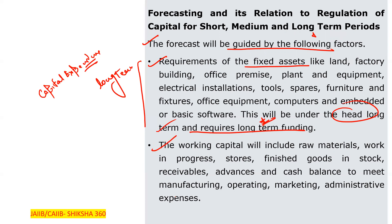Second factor: working capital — for processing day-to-day work. Working capital will include raw materials, work in progress, stores, finished goods in stock, receivables, advances, and cash balance to meet manufacturing, operating, marketing, and administrative expenses. Working capital is basically to meet day-to-day expenses. Additionally, working capital will also be required to provide for business advances and the gap between statutory dues payment and collection, as well as payment of income tax.